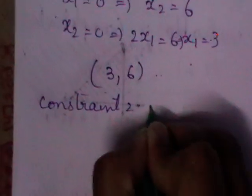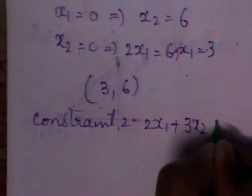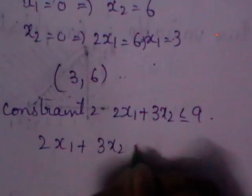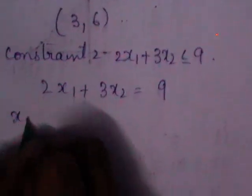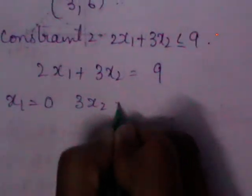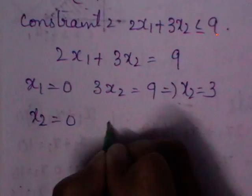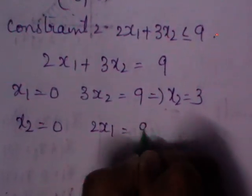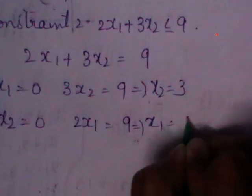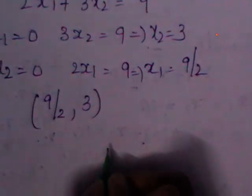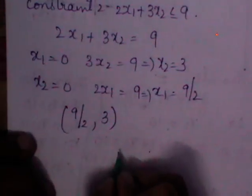The second constraint is 2x1 plus 3x2 less than or equal to 9. Again, treat it as an equation: 2x1 plus 3x2 equals 9. Put x1 equal to 0 — you get 3x2 equals 9, so x2 equals 3. Put x2 equal to 0 — you get 2x1 equals 9, so x1 equals 9/2. The ordered pair for the second constraint is (9/2, 3).